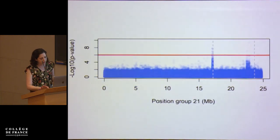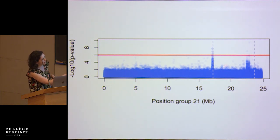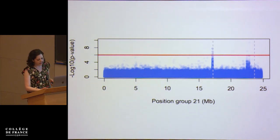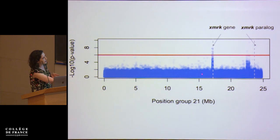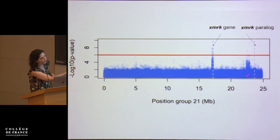If we zoom in on that chromosome, we actually see a couple of distinct signals — around 18 megabases and around 22 megabases. What's quite interesting and immediately jumped out to us is that our stronger peak contains only a single gene, which is the X-mark gene. There's also an X-mark paralog nearby, but it's not completely overlapping with our second peak.